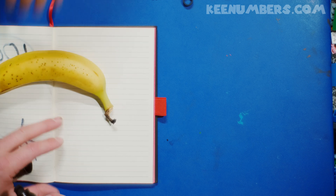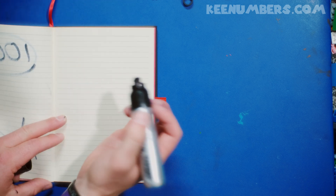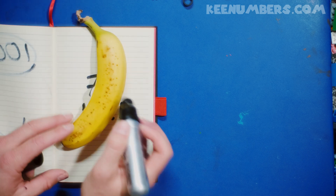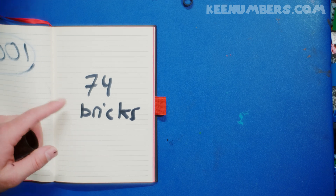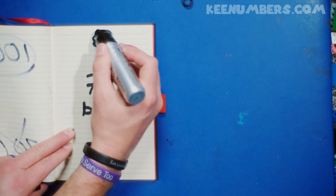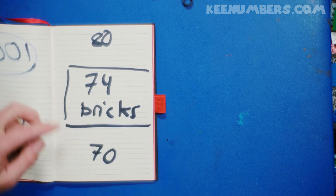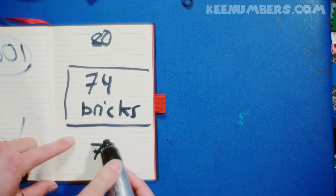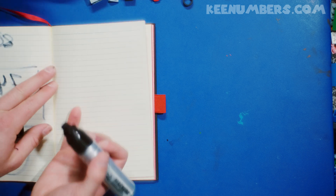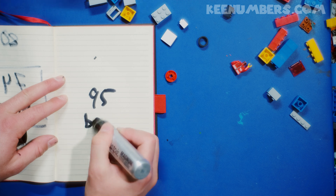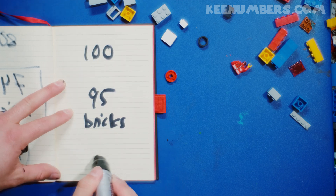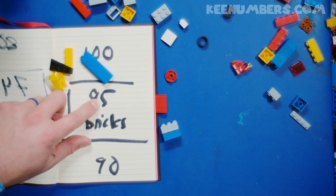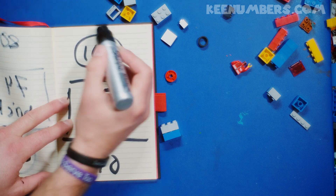Let's do a couple more bonuses. If we have 74 bricks and you want to round — should we round down to 70 or round up to 80? It ends in four, so we round down to 70. And 95 bricks — if it ends in five, six, seven, eight, or nine you're going to round up. So 95 bricks is about 100 bricks.